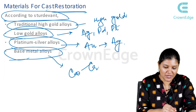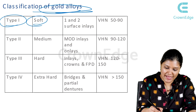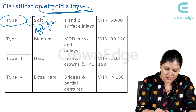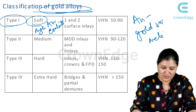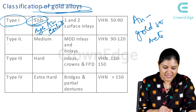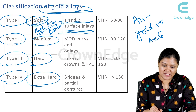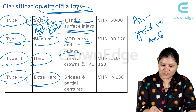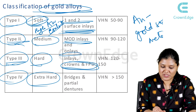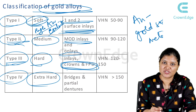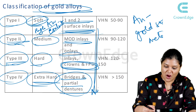Classification of gold alloys: Type 1 is soft because it has a very high gold content — gold is a soft metal, so high gold means more soft. Type 2 is medium, Type 3 is hard, and Type 4 is extra hard. Type 1 is used for one or two surface inlays. Type 2 is used for onlays and MOD inlays. Type 3 is used for crowns and FPDs because further strength is required. Type 4 (extra hard) is used for bridges and partial dentures.